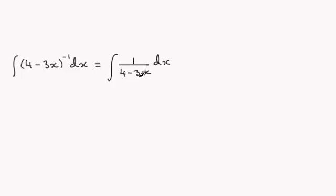And when you get something like this I can see that when you differentiate the denominator you get negative 3. And that being a constant, what we've got at the top here is a constant. So this is going to be what we call a natural log type.